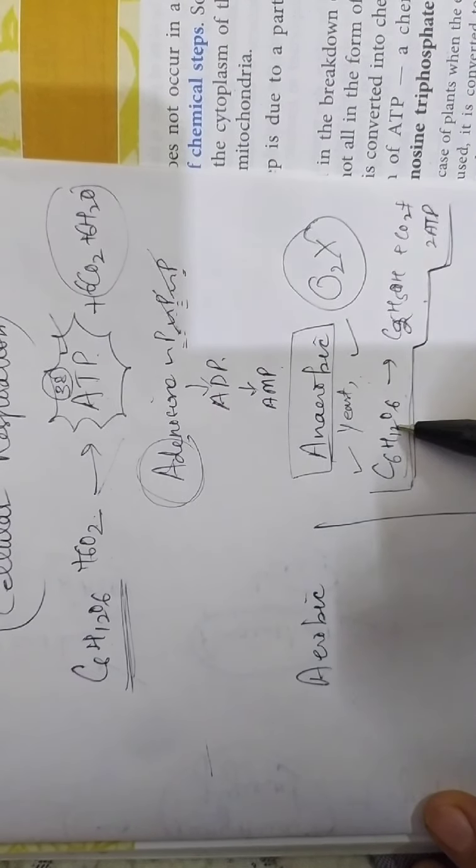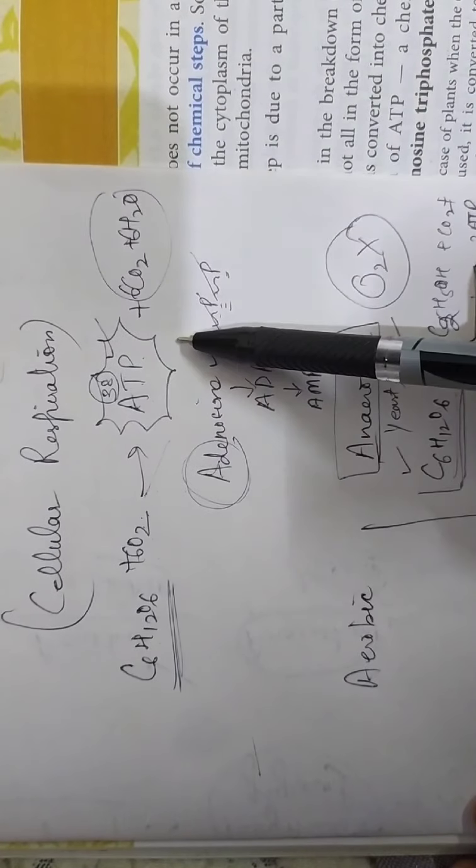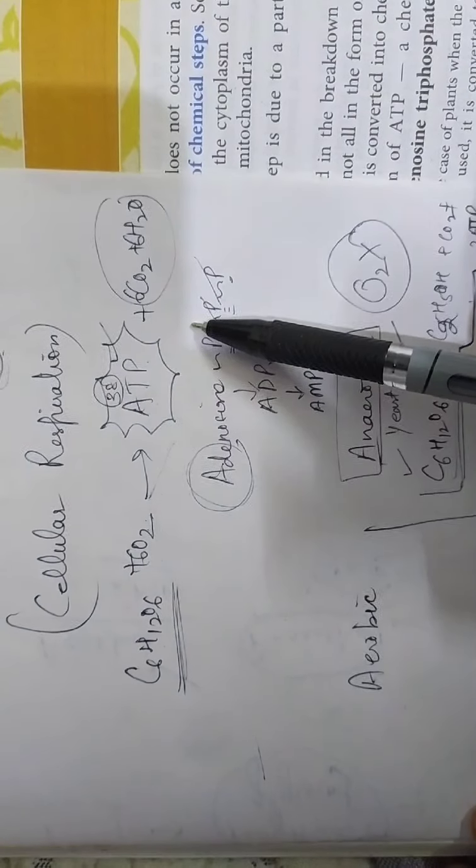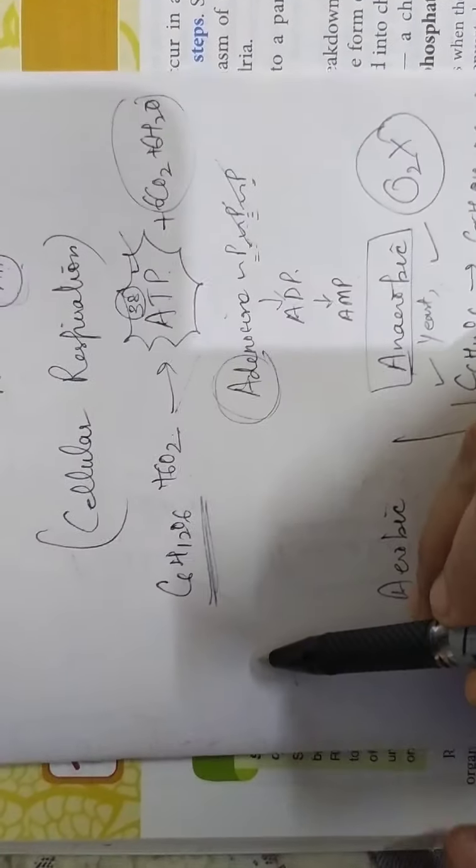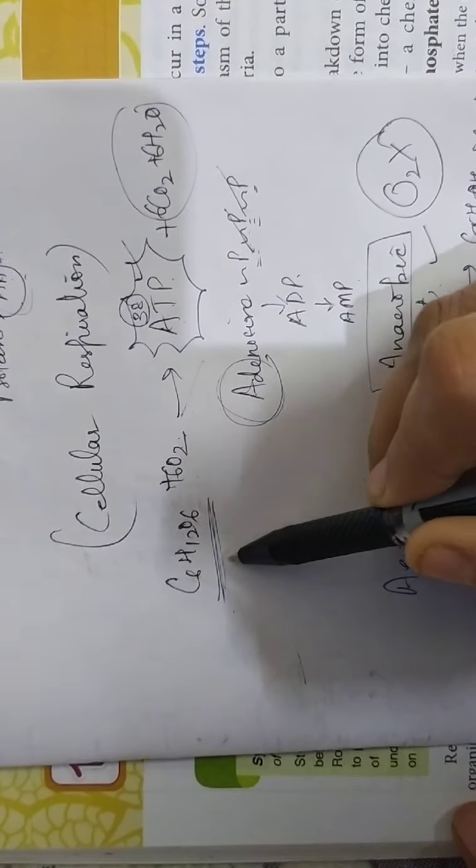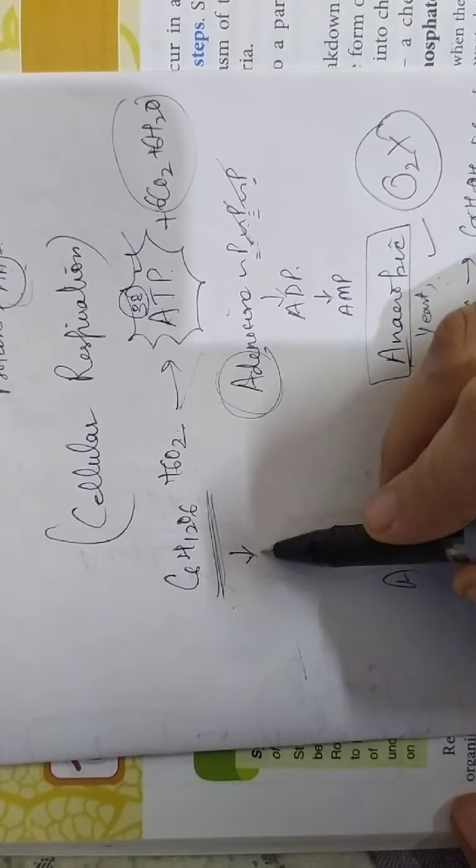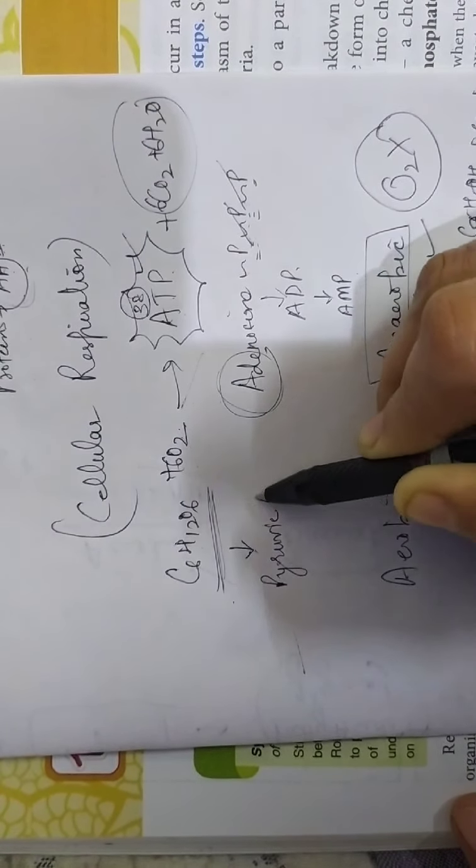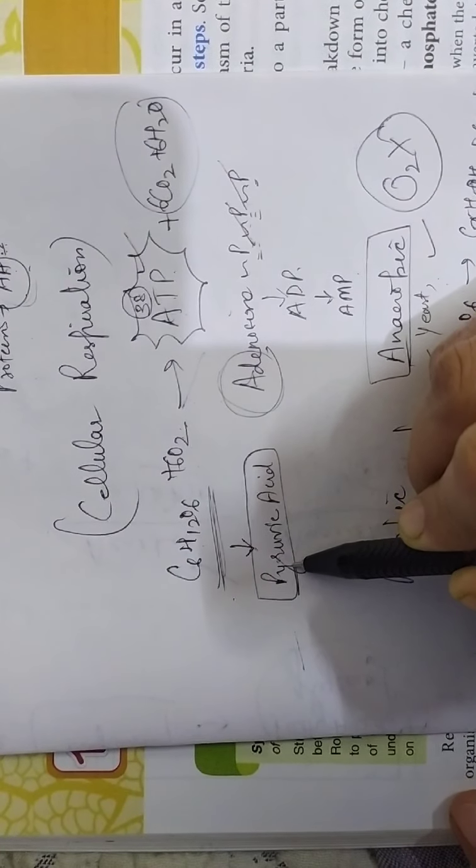This is actually common for both. This respiration process is not a one step process. We write the whole equation but actually it is a very long process. It takes place in various steps. The first step takes place in cytoplasm where this glucose breaks. And inside the cytoplasm, its breakdown produces pyruvic acid. We get two molecules of pyruvic acid from one molecule of glucose.